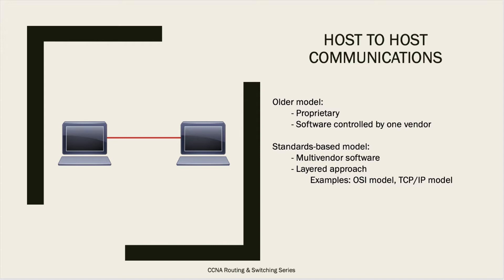The standard-based model involves standards, and the whole idea behind it was to have multi-vendor software — meaning the software is not tied to one particular vendor. You can buy two endpoints from two different vendors and they will still be able to communicate. Examples of this model include the OSI model and the TCP/IP model. The standard-based model, also called the layered model, reduces complexity by breaking network communication into smaller and simpler parts.